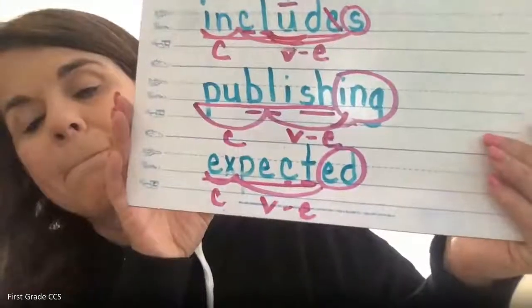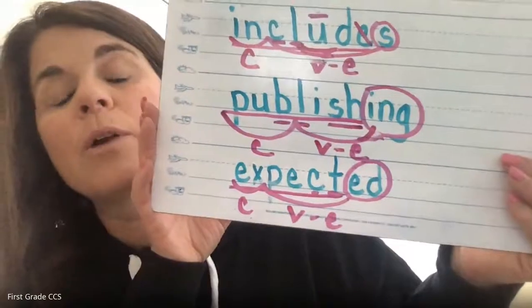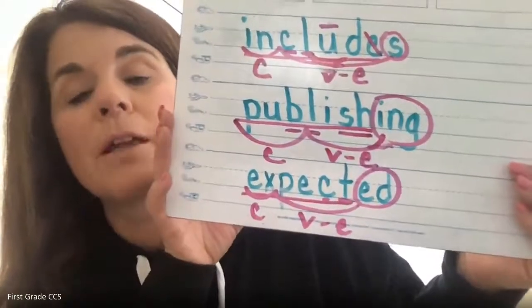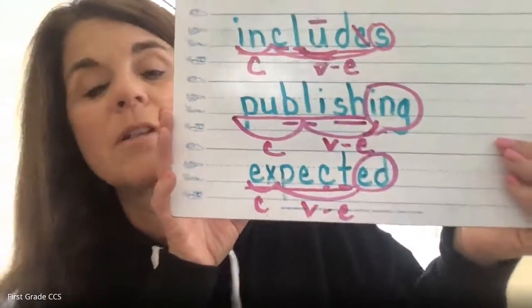Now I'm going to do a word with the E-D suffix, and the word is 'expected.' I expected you to get a good night's sleep for the hard work today. Expect is the root word — we added the suffix E-D to make it expected. The C and the T is a blend. The syllables are 'ex' and then 'pect,' and it is a closed syllable and a VE syllable. So what we're doing is just building on what we already know — we've broken down these things, we've practiced them, but now we're putting the two syllables together, marking our syllables, showing our suffixes, and marking up our words.